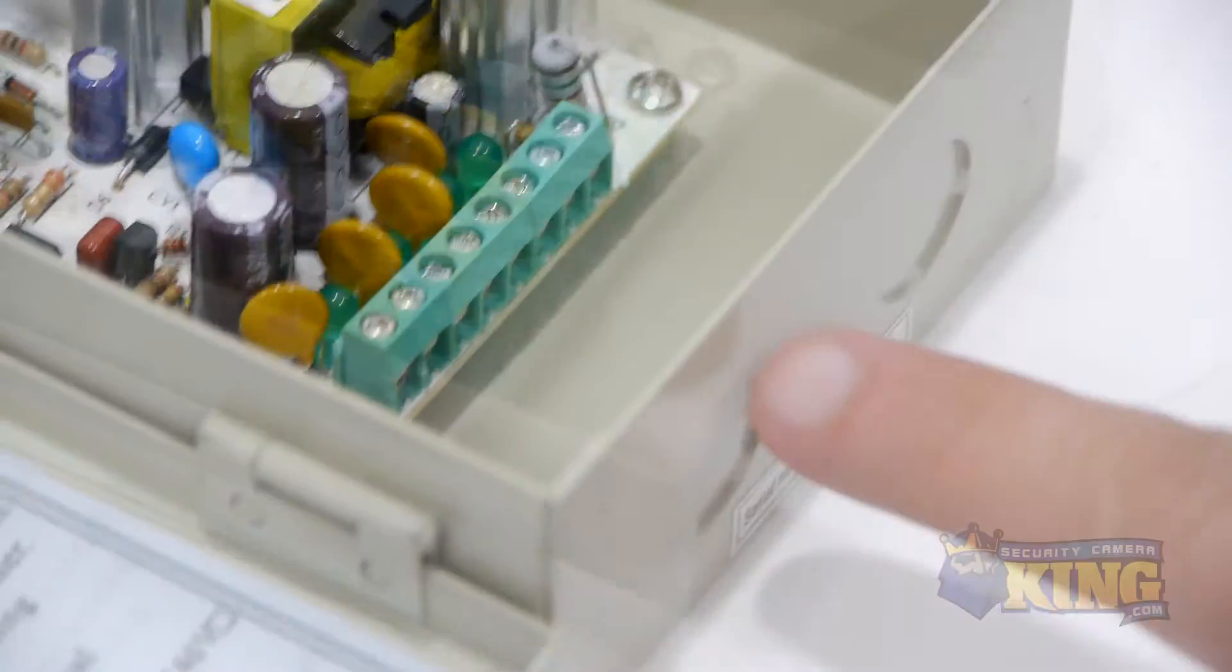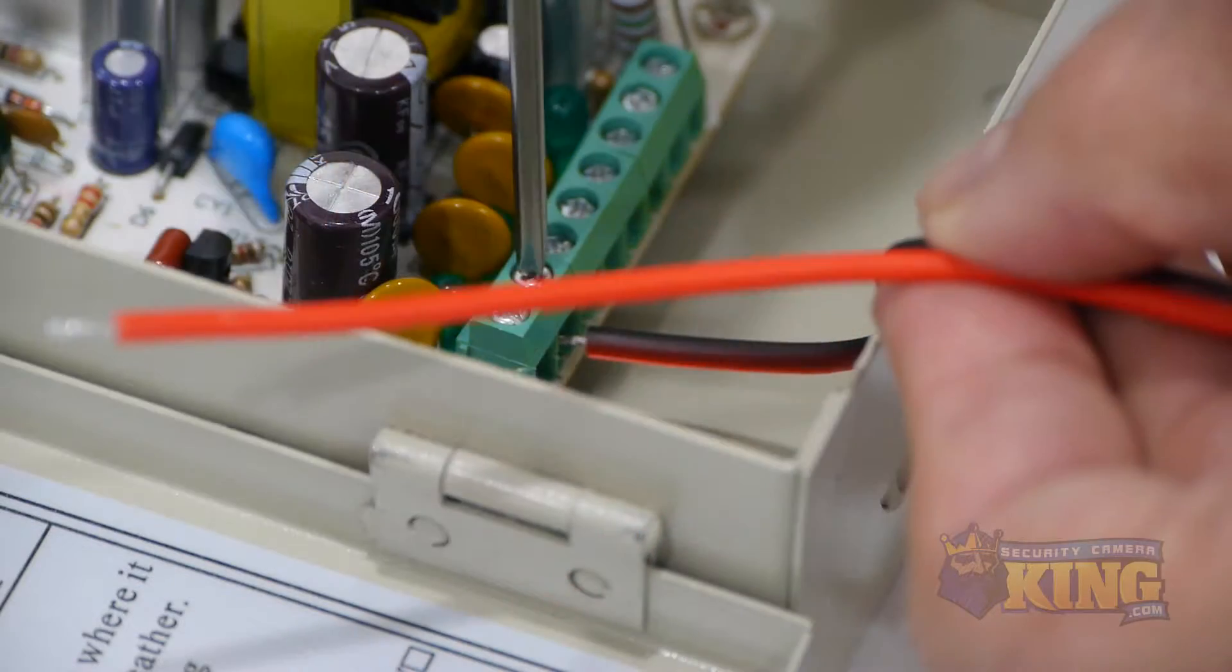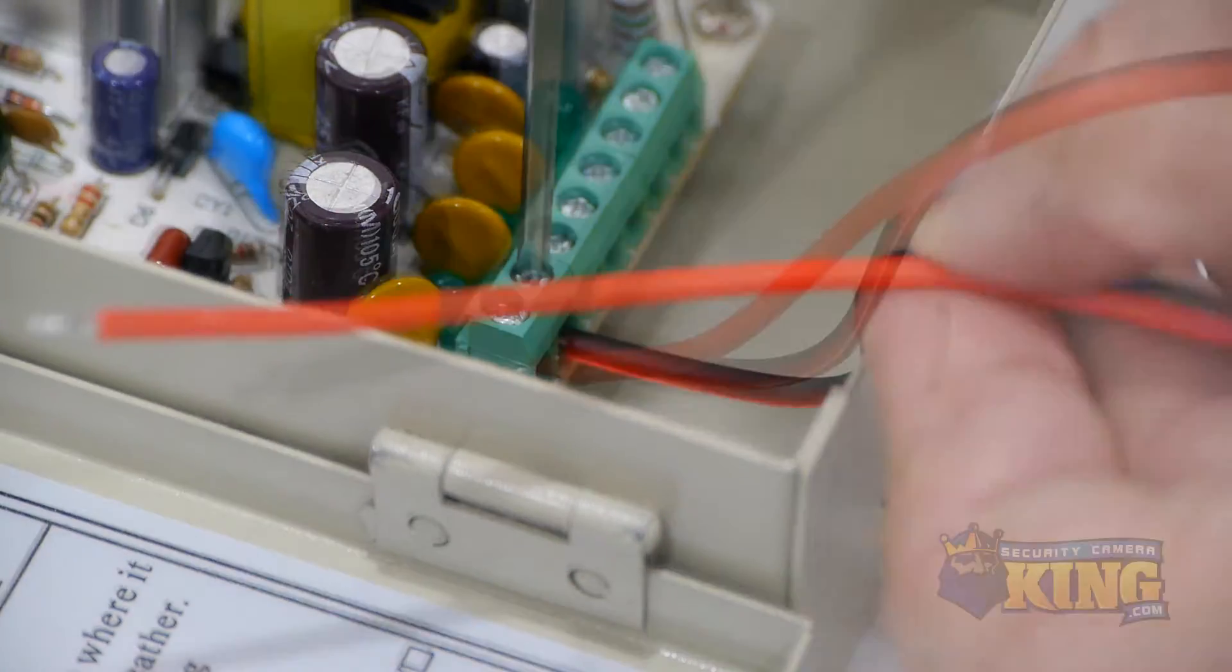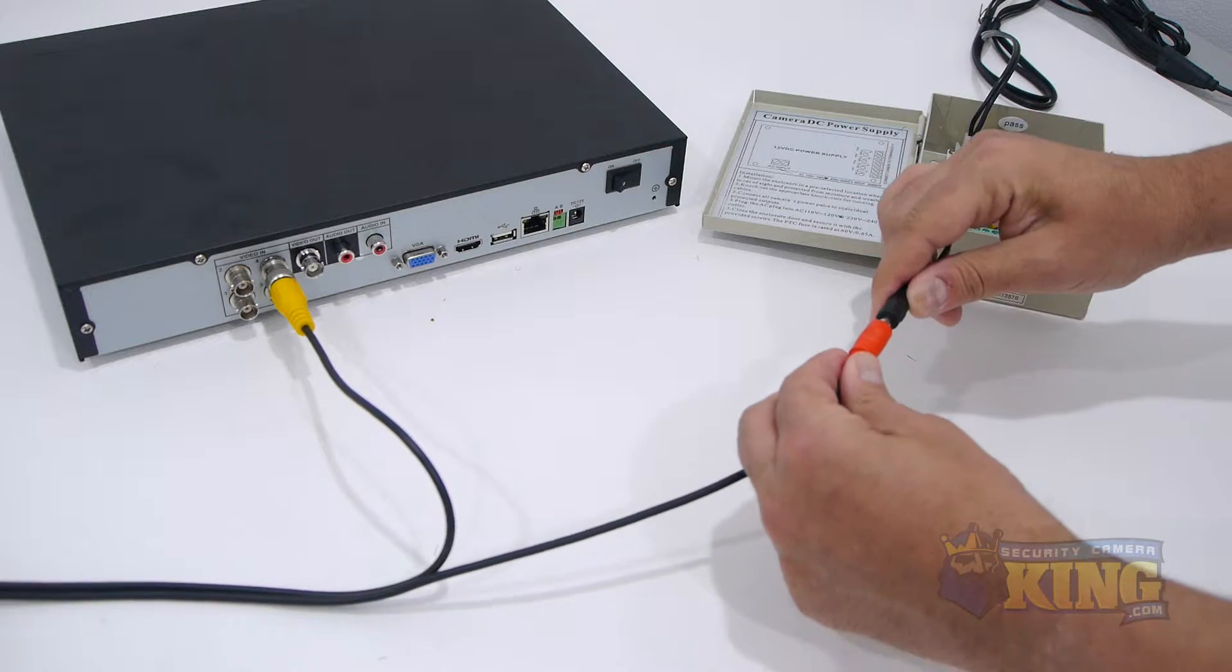First, feed the power leads through one of the punch-outs on the power box. Then attach both wires to the lead on the terminal block for each camera. Then simply plug the power lead into the plug-and-play cable.